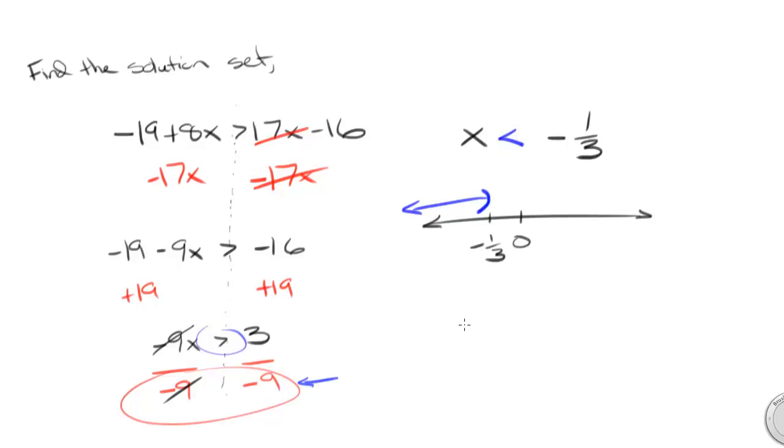The interval notation of that would be negative infinity to negative one-third. We always put a parenthesis around the negative infinity, and we put the parenthesis around the negative one-third here because negative one-third is not included in this set.